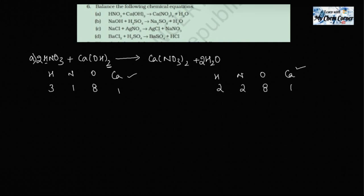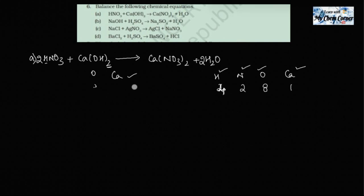Now let's recount hydrogen and nitrogen since we added coefficients to nitric acid and water. Hydrogens: two on HNO₃ plus two on Ca(OH)₂ gives a total of four on the left. On the right: two times two equals four — hydrogen is balanced. Nitrogen: two on the left, two on the right — balanced. The entire equation is now balanced with equal atoms on both the LHS and RHS.